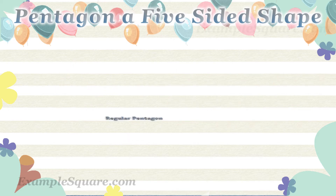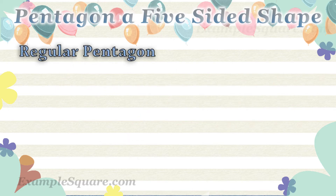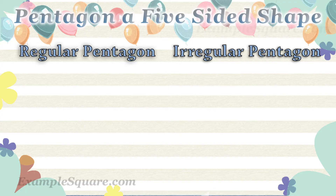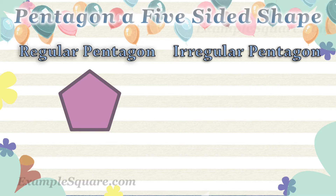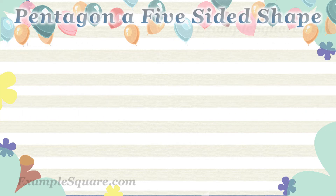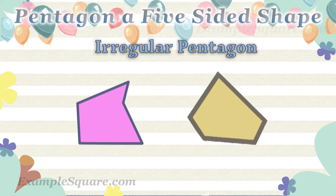What is a regular pentagon and what is an irregular pentagon? If all five sides of a pentagon are equal and all five angles are equal, then it is a regular pentagon. Otherwise, it is an irregular pentagon. These are examples of an irregular pentagon, as the sides and angles are not equal.